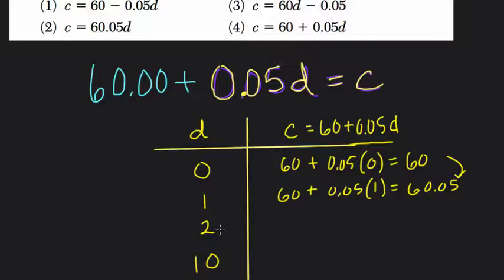Then if we have 2 for d, that means we're using 2 megabytes of data. It's 60 + 0.05 times 2. And what does that equal? Well, that's 60 plus 2 times 5 cents is 10 cents or a dime, and that's $60.10. So it's making sense. Every megabyte of data we add, we add 5 cents to our bill.